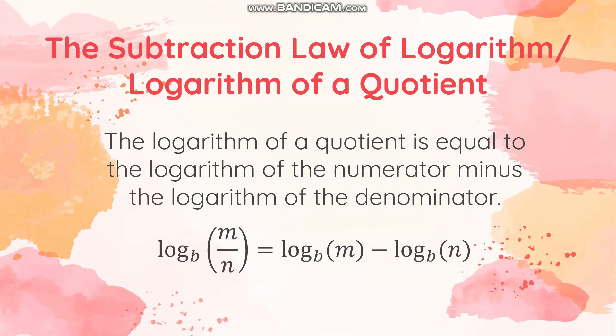The second law of logarithm is what we call the subtraction law of logarithm, or logarithm of a quotient. The logarithm of a quotient is equal to the logarithm of the numerator minus the logarithm of the denominator. If the argument is in fraction form with a numerator and denominator, you can write them separately — the numerator as one logarithmic expression and the denominator as another — then connect them with subtraction. Notice there are always paired operations for each law: for the first law it's addition and multiplication; for the second law it is division and subtraction.